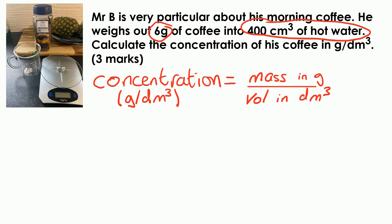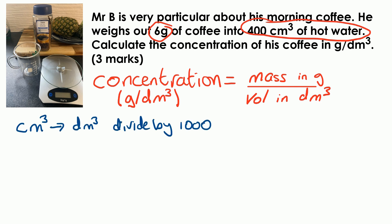And straight away that should be ringing alarm bells, because in the question the volume is given in cm³. So you need to remember: to change from cm³ to dm³, you divide by 1,000. So 400 divided by 1,000 is 0.4 dm³.